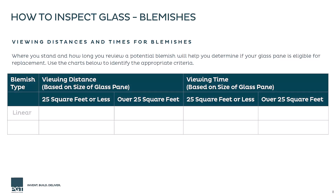In the event you've spotted a linear blemish, begin by standing 6 feet away if your unit is smaller than 25 square feet and inspect for 10 seconds. If the unit is larger than 25 square feet, you will want to stand 10 feet away and inspect the glass for 20 seconds. If the linear blemish is not visible during the inspection, your glass passes and is a quality product.